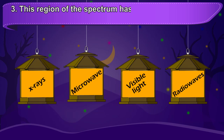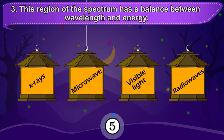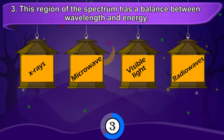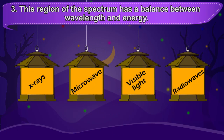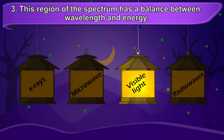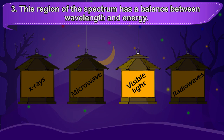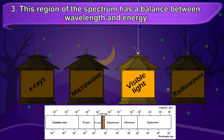This region of the spectrum has a balance between wavelength and energy. The answer is the visible region. As mentioned before, the visible region lies exactly in the middle of the spectrum, between gamma waves of the highest energy and radio waves of the lowest energy. Thus, the visible region has a balance between wavelength and energy.